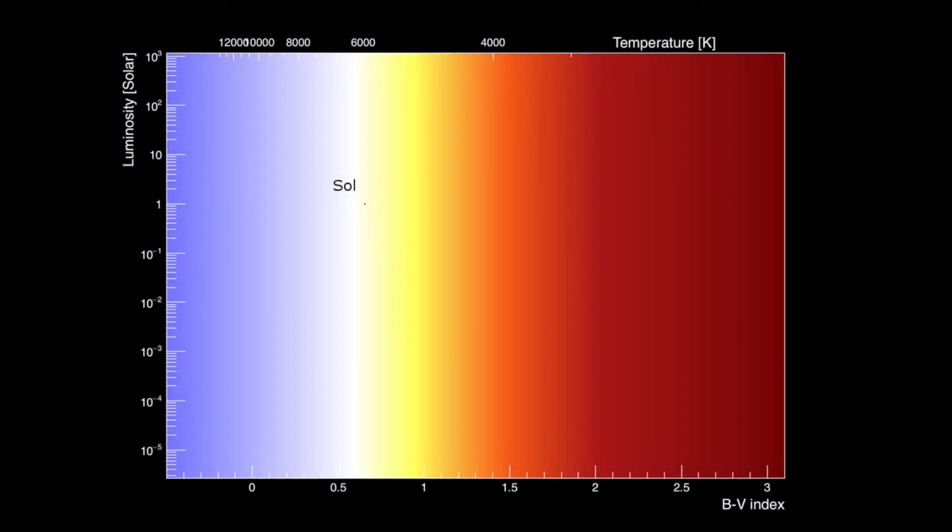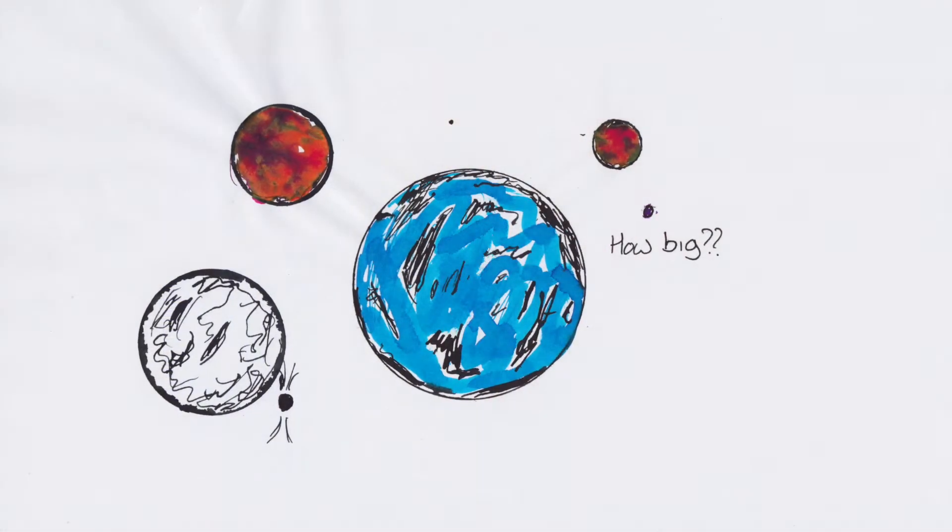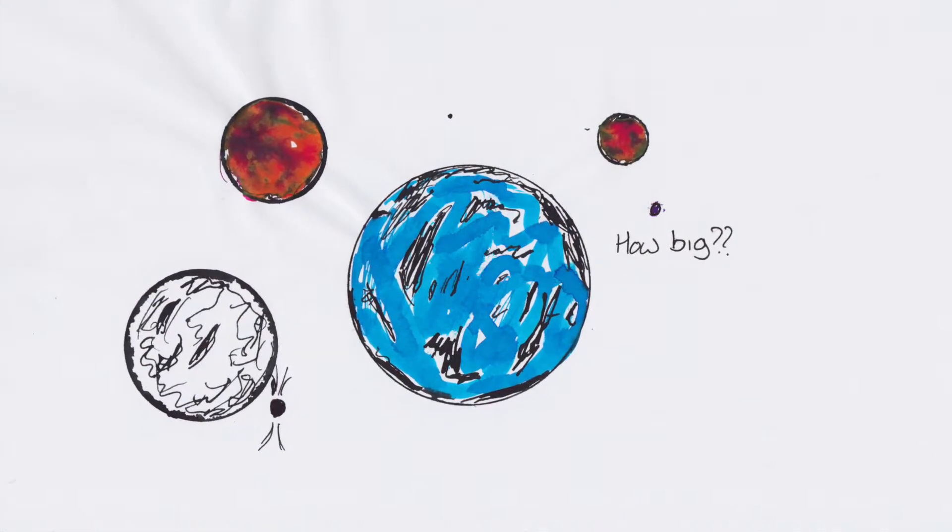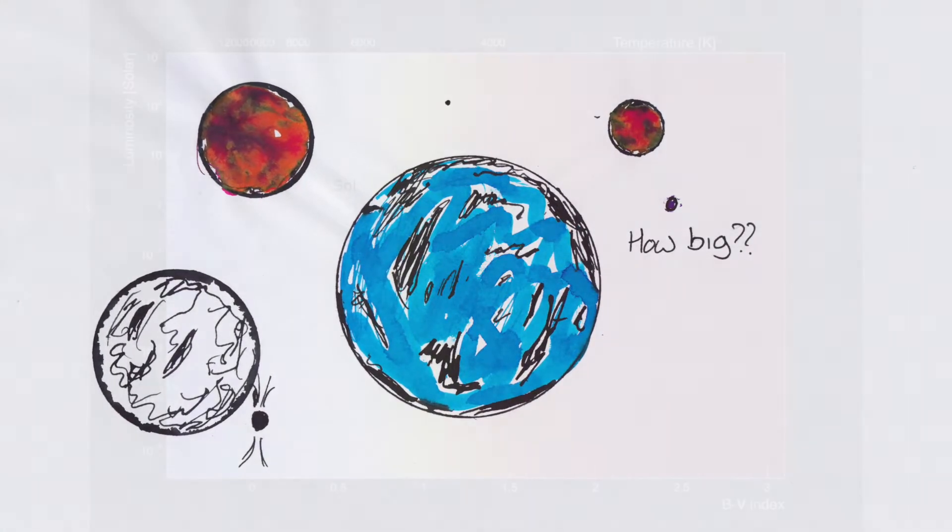What you see here is a Hertzsprung-Russell diagram of luminosity against BV color index. Great, I hear you say, but what does it really mean, and why does it matter? Well, what it shows us is how we can logically compare the physical sizes of different stars, and how we characterize them.